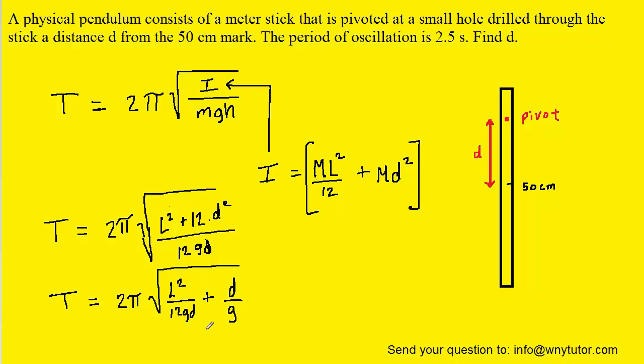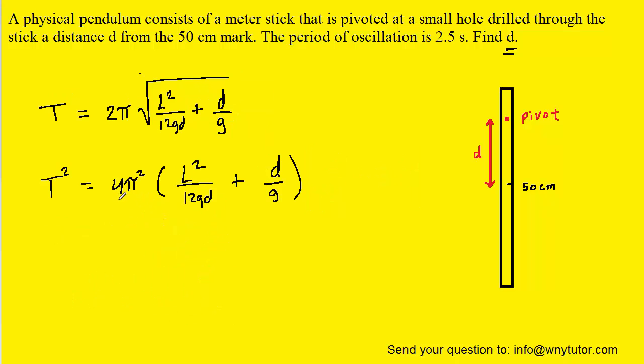Now of course our goal is to find d, and so what we can do is square both sides of this equation. Perhaps we could then divide both sides by 4π².